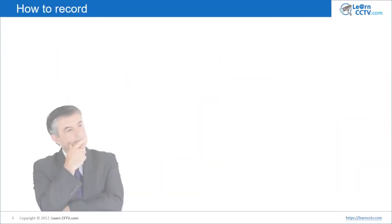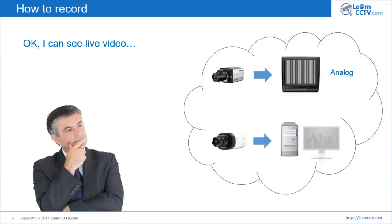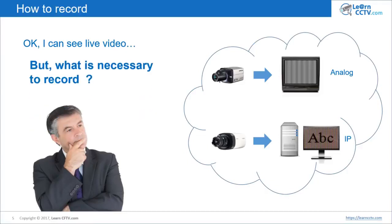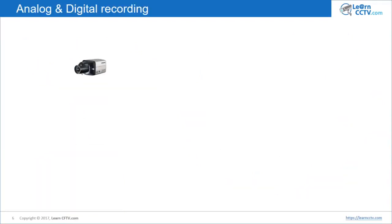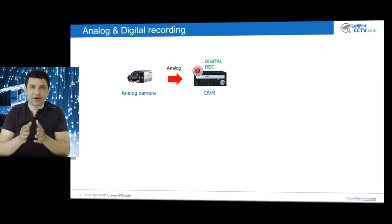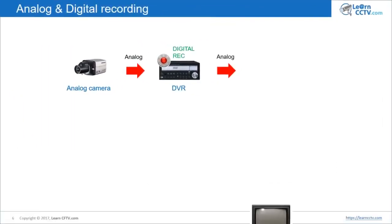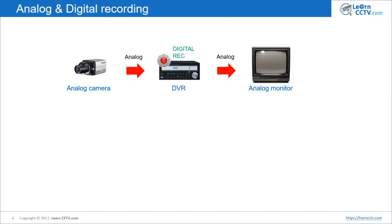Now let's talk about recording. You can see live videos from the camera to your monitor in an analog system, or from your IP camera to your computer and monitor in an IP system. For recording in an analog system, you send the video in analog format to your DVR — the Digital Video Recorder. It converts from analog to digital so you can record. You always record in digital format — you don't record TV lines, you record pixels. You can also send analog video directly to your monitor, connecting your camera to your DVR or DVR to your monitor using cables with analog signal.